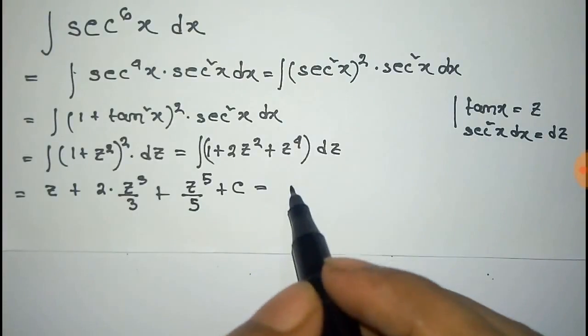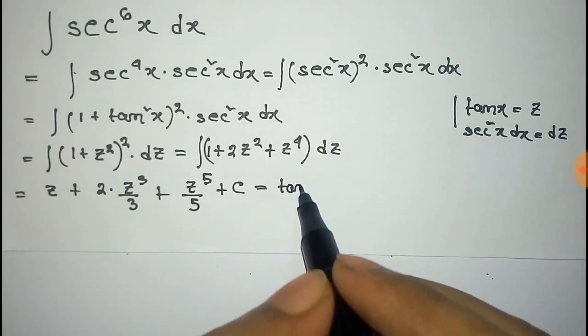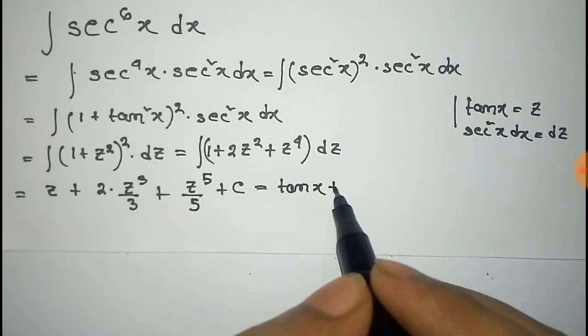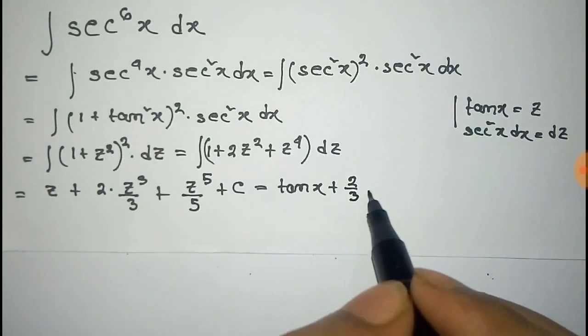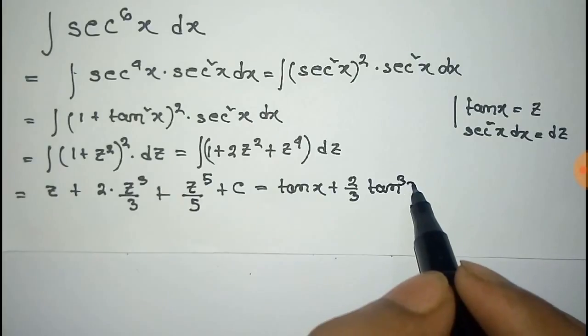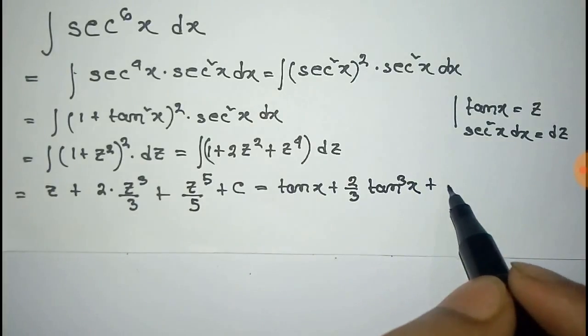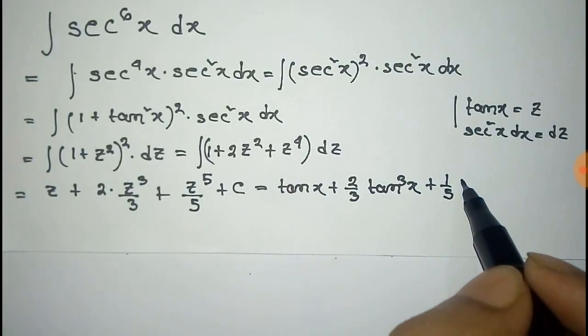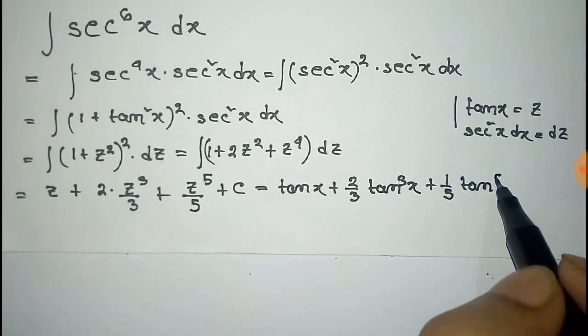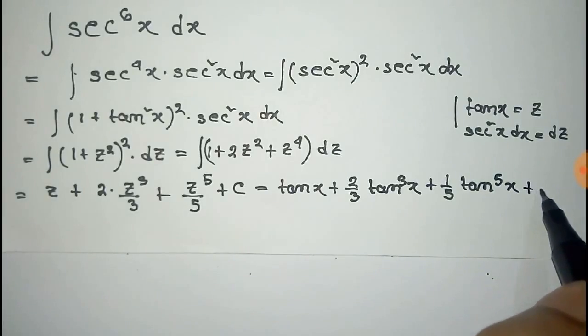Now we have to put the value of z, that is tan x. So it will be tan x plus 2 by 3 tan^3x plus 1 by 5 tan to the power 5x plus constant c. Thus this is the integration of sec to the power 6x dx.